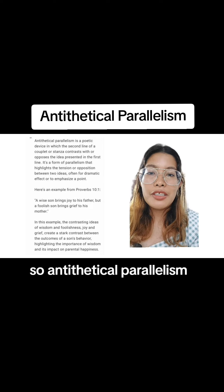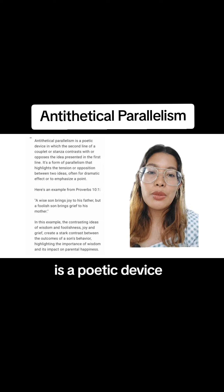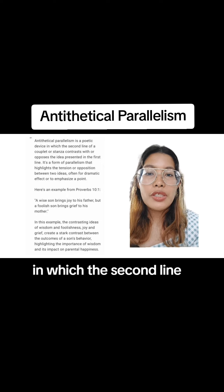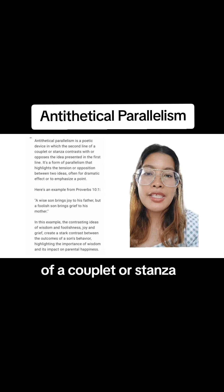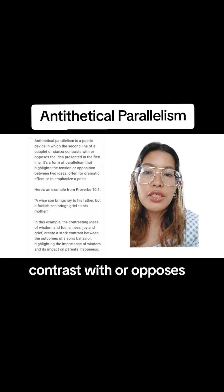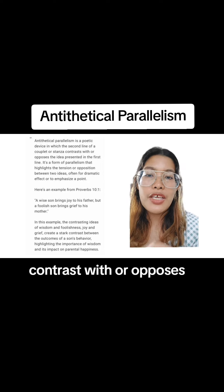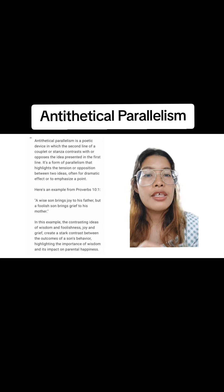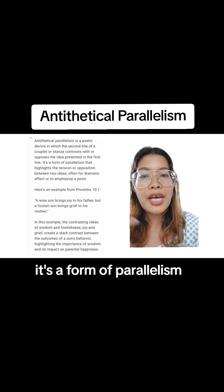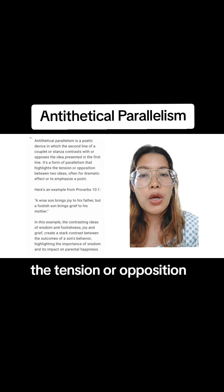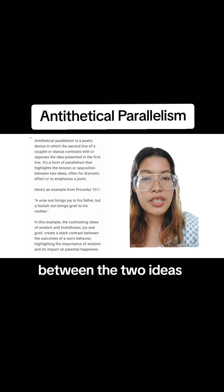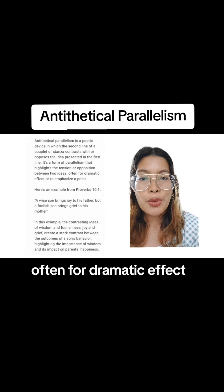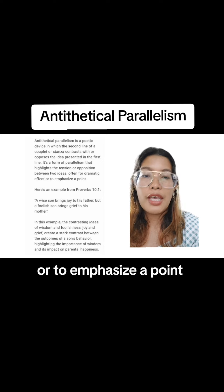Antithetical parallelism is a poetic or literary device in which the second line of a couplet or stanza contrasts with or opposes the idea presented in the first line. It's a form of parallelism that highlights the tension or opposition between the two ideas, often for dramatic effect or to emphasize a point.